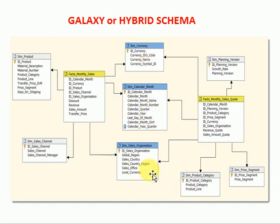When you are talking about hybrid schema or galaxy schema, the major advantage is conformed dimensions and reducing your query on large tables, because those tables you are using can be shared across all your data marts. It will improve query performance because the same table is created only once and used across all your data marts. You can also reduce storage space since the same table is reused.